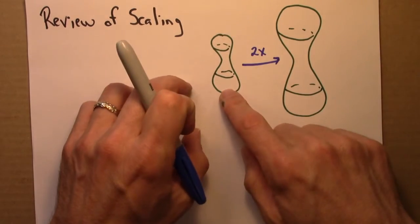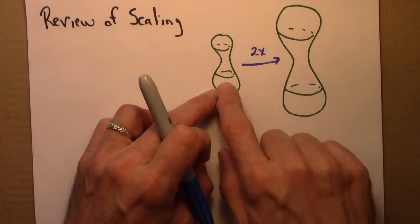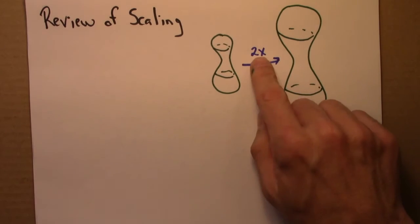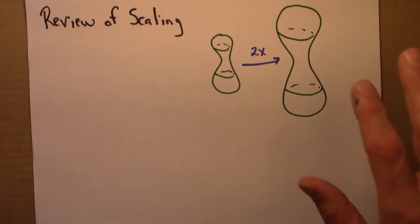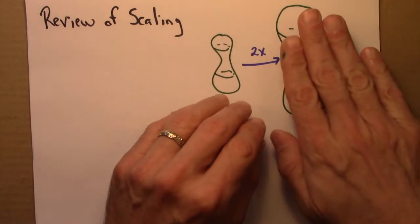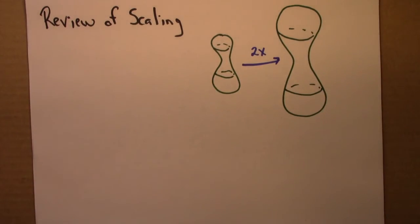And we want to know how might properties of this shape change when this happens. So by 2x here, I mean this is two times larger. It's two times larger in this direction, in this direction, and in that direction.